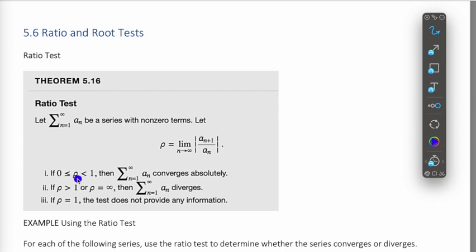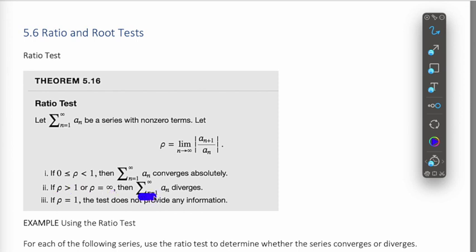If the limit is less than one (or greater than or equal to zero), then we can say that the series converges absolutely. If the limit is greater than one or infinity, then the series diverges. If the limit is equal to one, then the test is inconclusive and we would have to try another test.